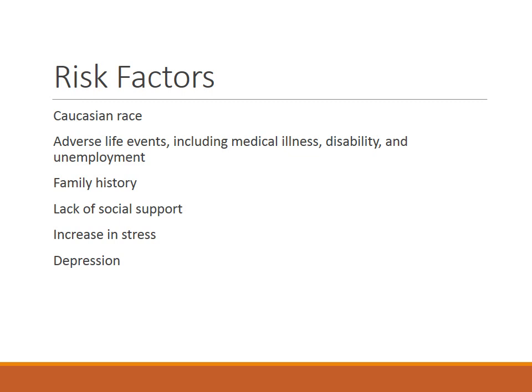We have been able to identify some risk factors. Of course, female — which I don't have on the slide, but that's important. Caucasian race, adverse life events including medical illness, disability, or unemployment. If there's a family history of anxiety, that also plays a part — there's a lot of genetic information related to mental health disorders. A lack of social support, so those that are single, divorced, or living alone are more likely to have problems. Increase in stress — sometimes stress can be something good that happens, but it still produces the same amount of stress, so it can be good or bad.